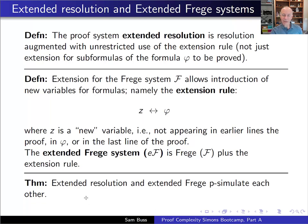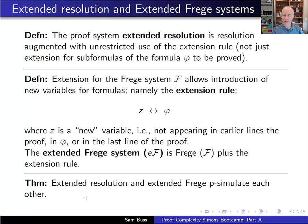A fairly intuitive theorem is that extended resolution and extended Frege p-simulate each other: any extended resolution proof can be translated into an extended Frege proof, and vice versa, with these translations feasible in polynomial time. The general idea of converting an extended Frege proof into an extended resolution proof is to introduce a new variable for every complex formula appearing in the extended Frege proof, so extended resolution can work with simple variables rather than complex formulas.